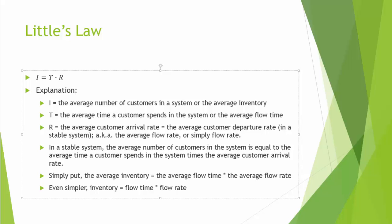Little's Law can be applied to a stable system in which the average customer arrival rate is equal to the average customer departure rate. For convenience, we call R the average flow rate, or simply flow rate. Simply put, the average inventory or the average number of customers in a system is equal to the average flow time times the average flow rate — inventory equals flow time times flow rate.